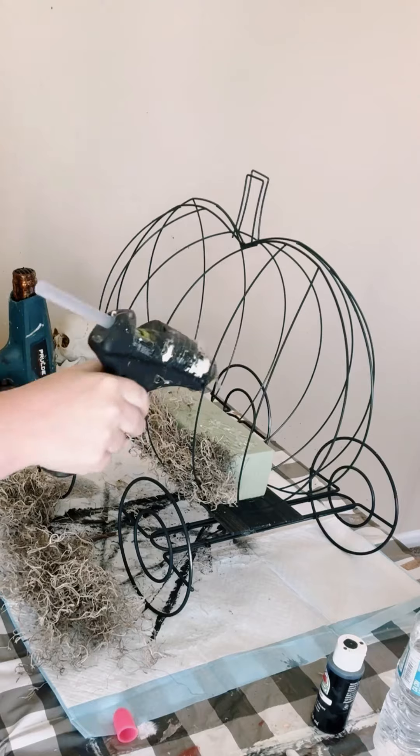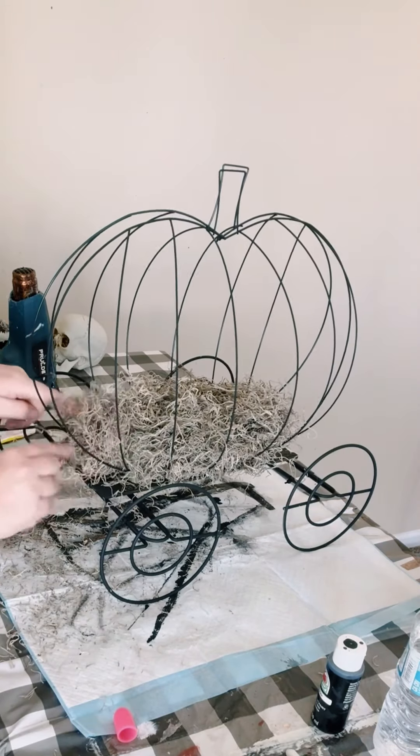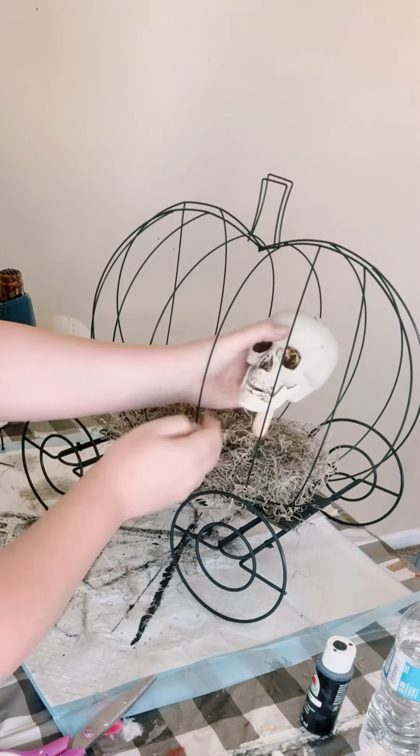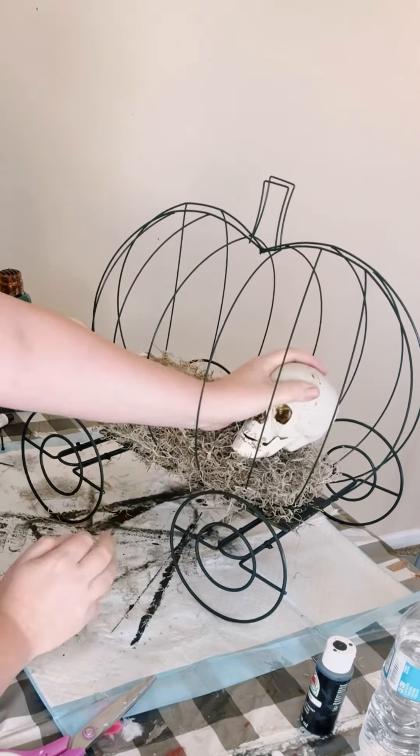Cover it completely with moss, and then add any spooky accent pieces that you would like. I had this plastic skull that I got from Walmart, and then I made this tombstone out of some cardboard.